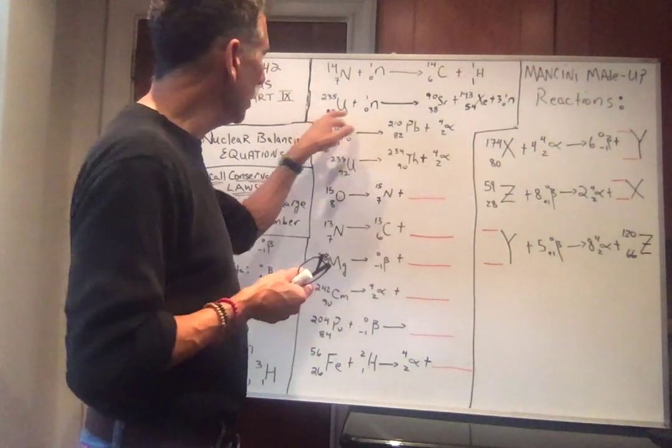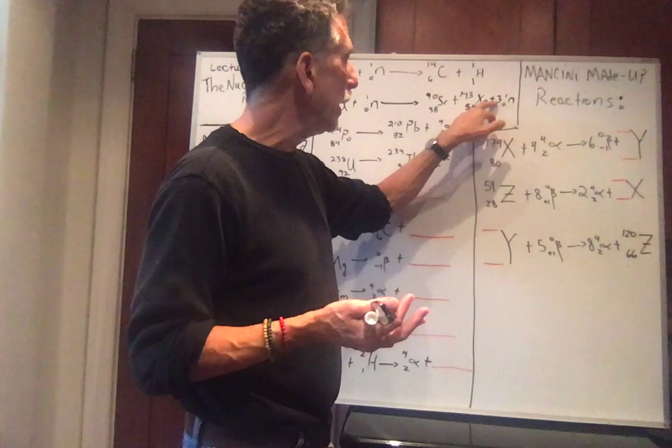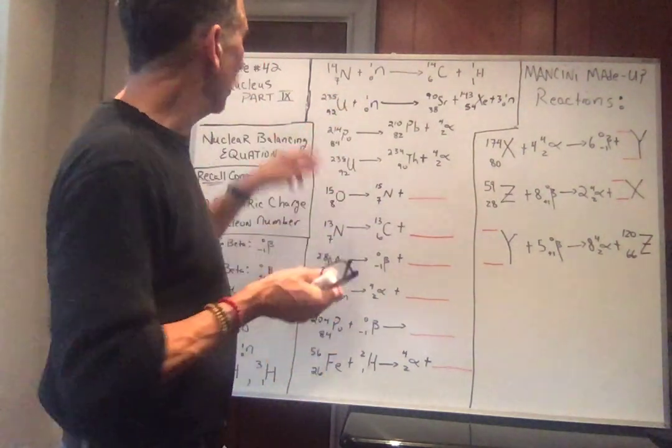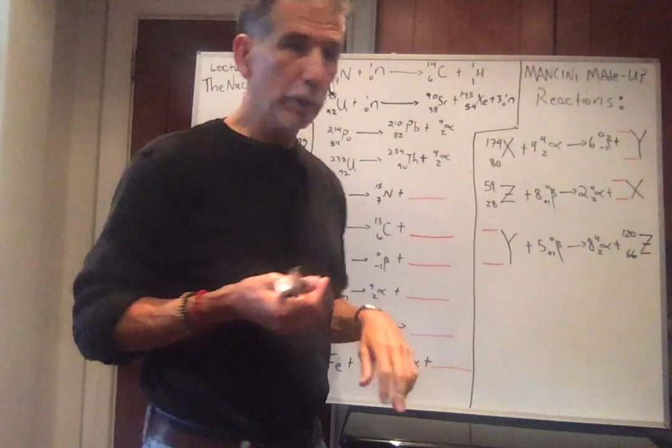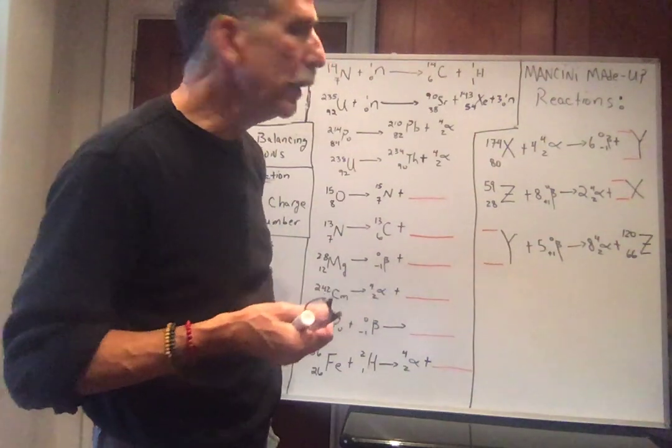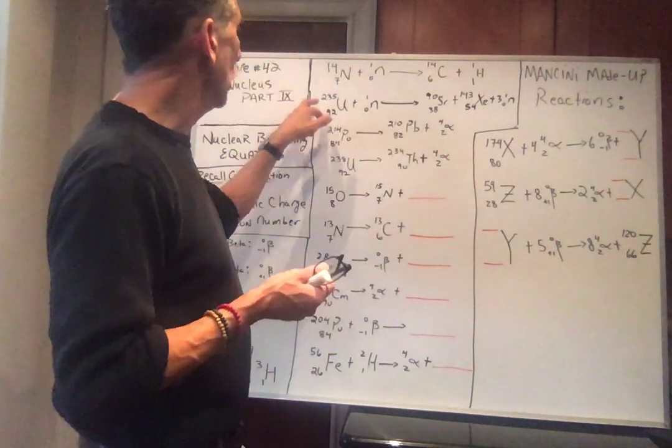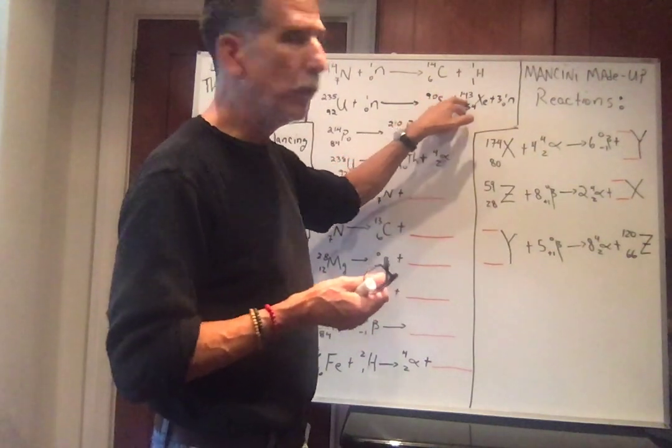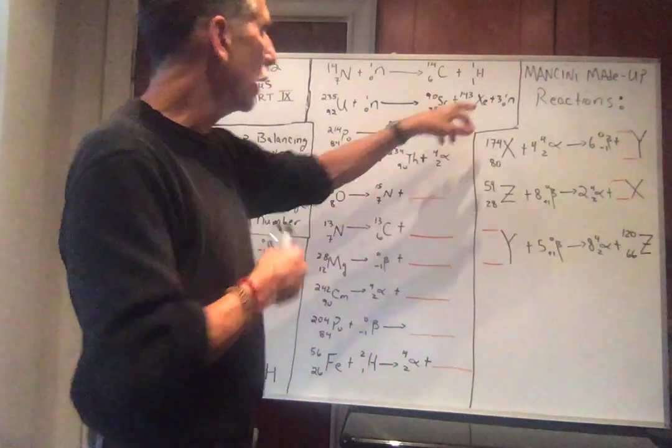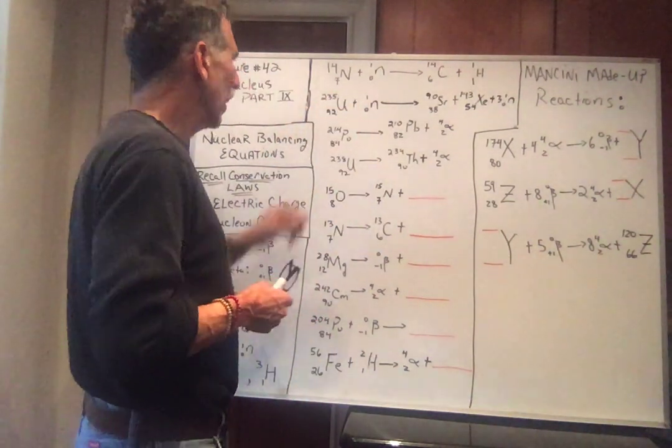Let's count the bottom. Let's count electric charge. 92 plus zero, 92. 38 plus 54, 92. Three times zero is still zero. So the 92 balances. Let's look at the nucleon number. 235 plus one is 236. 90 plus 143 is 233. Three times one is three. So that's 233 plus three is 236. So 236 is the same as 236, the charge you began with.